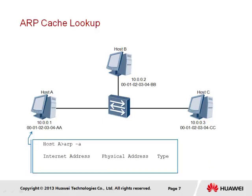The first stage of any ARP process is to determine whether the ARP process is actually necessary at all. Any device that operates at the network layer will contain what is known as an ARP cache table, used to record the IP address and the MAC address to which it is resolved. The end station must determine whether such an association currently exists in the ARP cache table. In this instance, the ARP cache table is empty and therefore no hit can be achieved, meaning that the ARP operation is required.